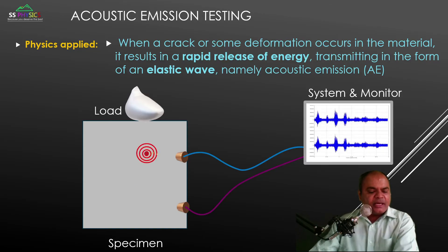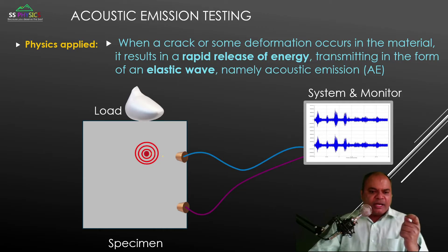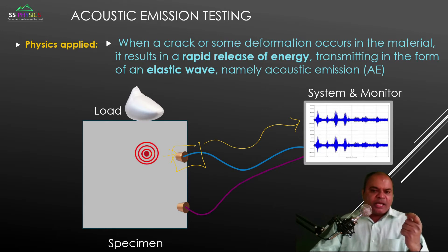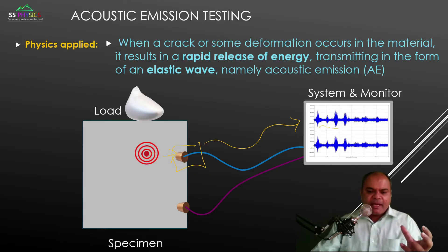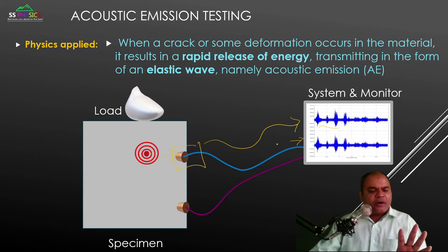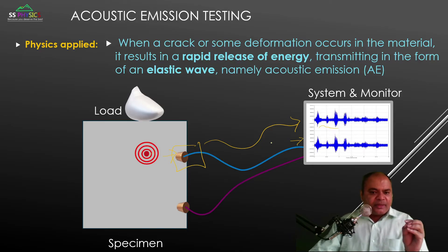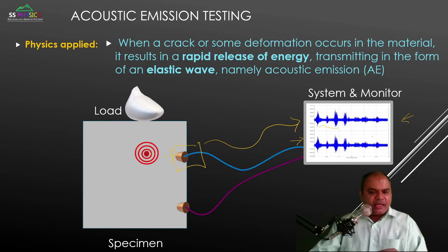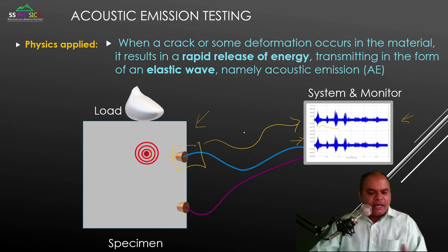When a crack occurs it generates signals for only a fraction of a second, and these signals reach the surface where sensors are attached. The sensors send the signal to a monitoring display device. You can attach multiple sensors on the specimen to monitor it continuously. If there is no flaw or damage, you will not get that specific type of signal; only when a crack occurs due to external load will that signal appear on the monitor, triggering an alarm so you can inspect and prevent bigger accidents.